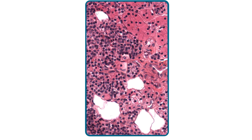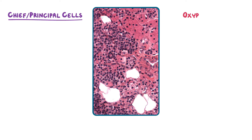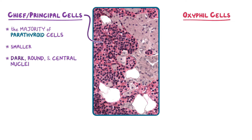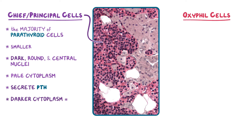Zooming in closer to a different area of the parathyroid, we can see a lot of the glandular cells. The glandular cells are made of mainly two types: the chief or principal cells and the oxyphil cells. The majority of the parathyroid cells are chief cells, which are smaller in size, have a dark round central nucleus, and a pale cytoplasm. These are the cells responsible for secreting PTH. If the cytoplasm looks darker, it's because of an increase in rough endoplasmic reticulum (RER), which stains strongly and is a sign that the cell is actively secreting PTH.